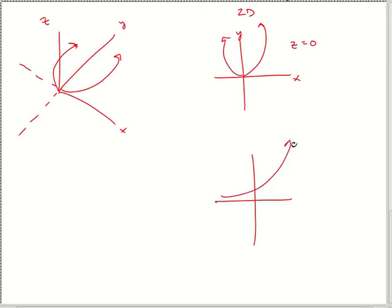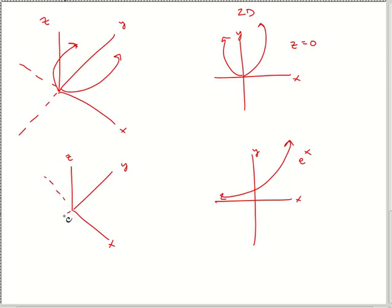If I had an exponential, like e to the x or something like that — again, this is x and y. In 3D land, we've got x, y, and z. You can draw the negative axes, which is pretty helpful to see. An exponential would look like this. Again, these are all flat — I'm not taking any Z into account.